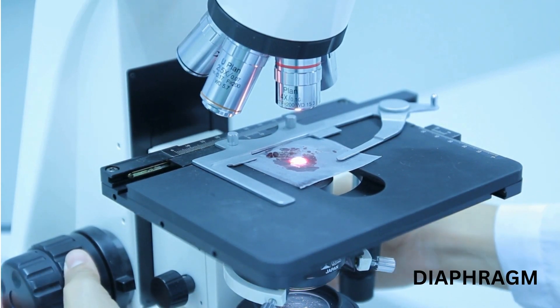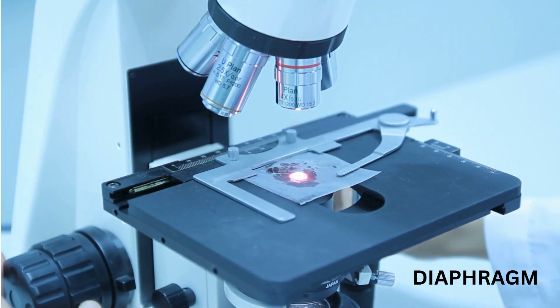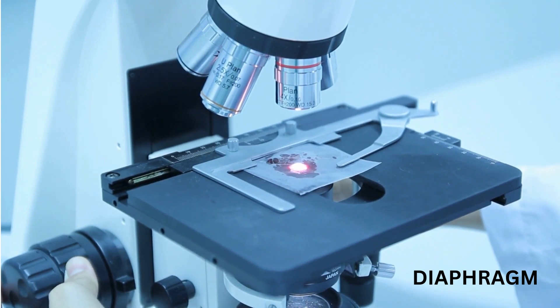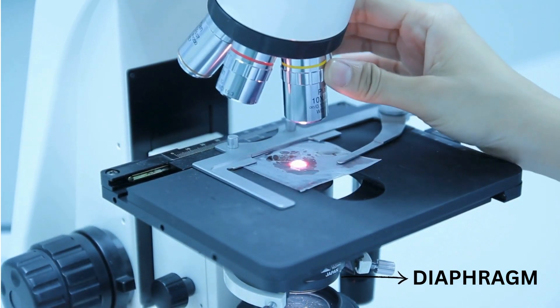Diaphragm. The diaphragm is a part of the condenser and controls the amount of light passing through it. Adjusting the diaphragm can help improve the contrast of the specimen.